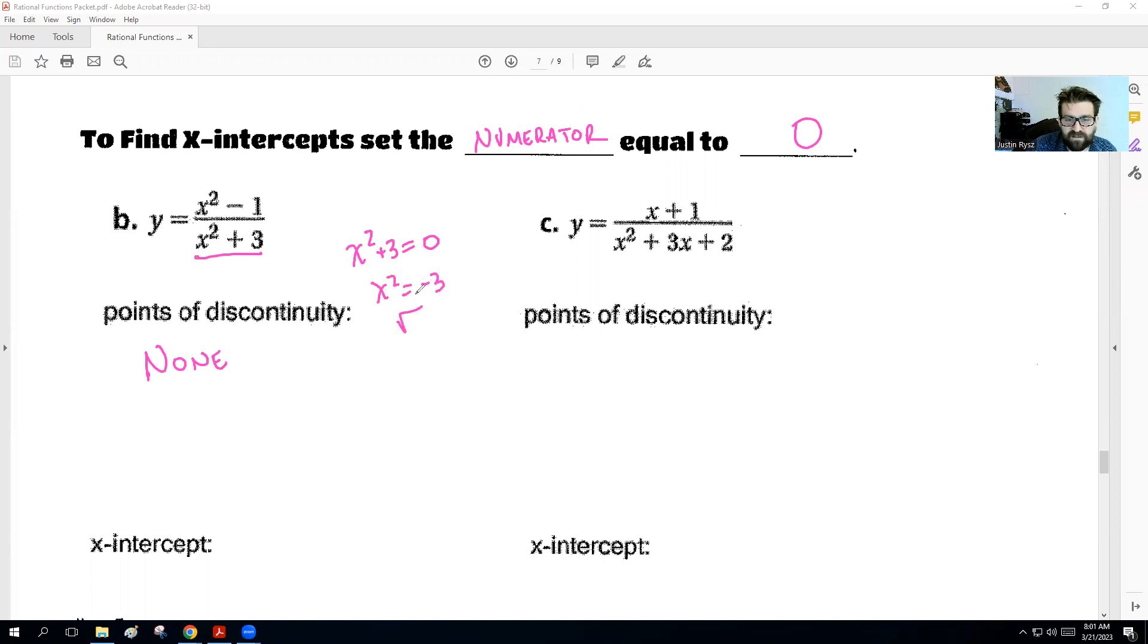Now, the x-intercept, we're going to take the top, set that equal to 0. Now, we could factor this, make this an x plus 1 and an x minus 1. Or we can move it over and take the square root. If you move it over and take the square root, remember, you do get two answers. And we'll get an x equals a negative 1 and x equals a positive 1.